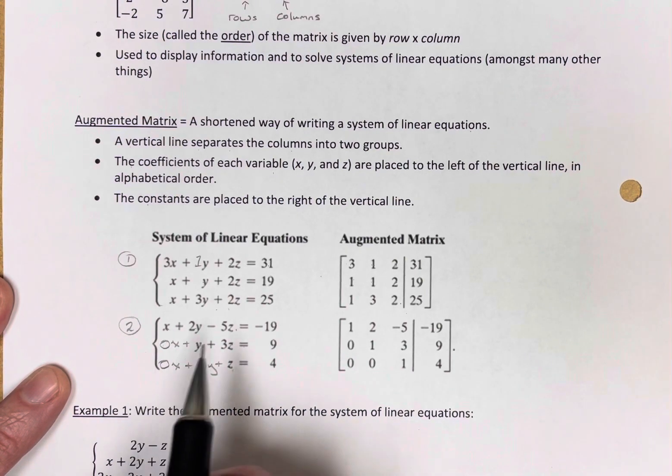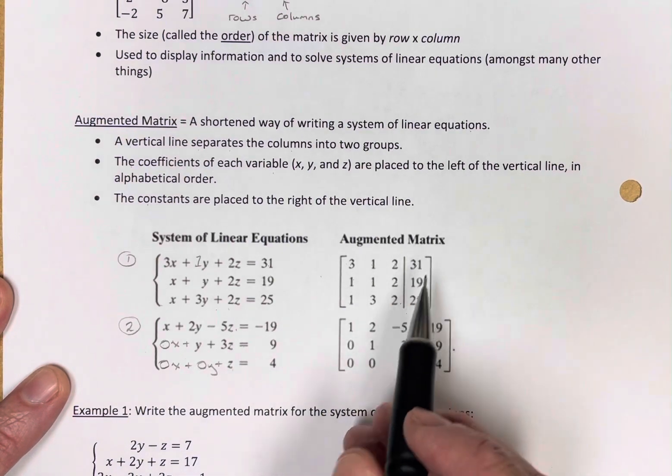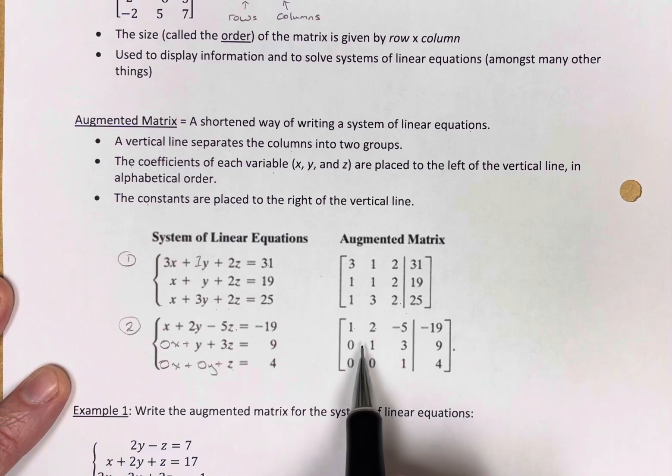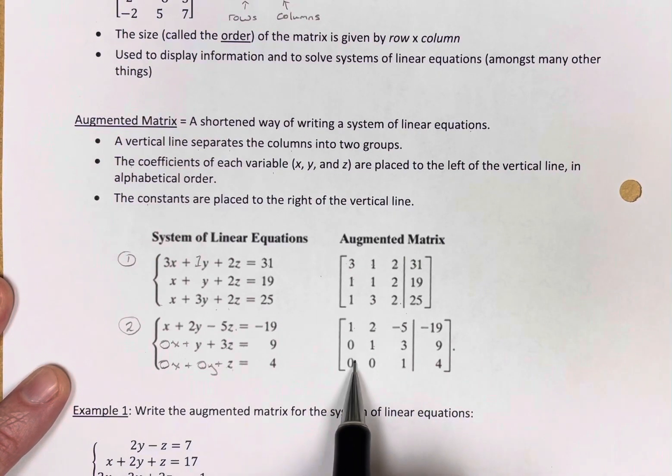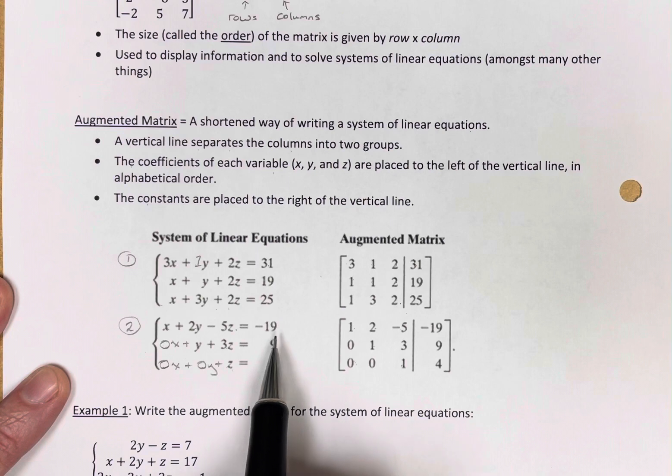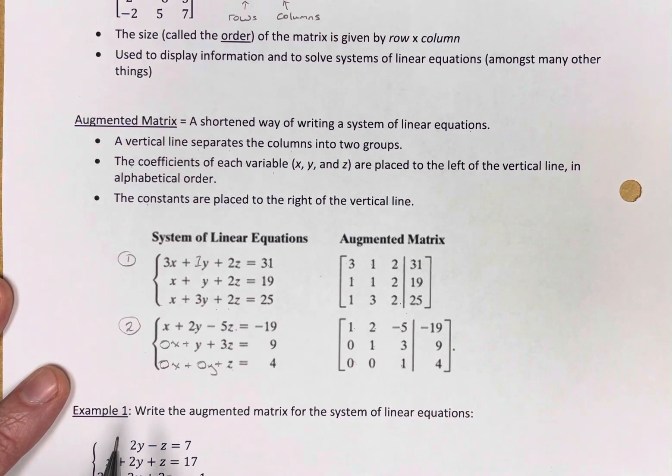We have a line through our equal signs. On the left we'll have one, two, negative five. Here it is in the augmented matrix. A zero, one, three; and a zero, zero, one for x, y, z. On the right are the constants. So negative 19, nine, four on the right of the line.